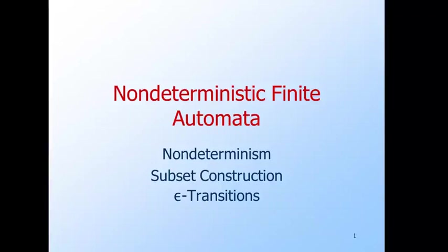Today we introduce the non-deterministic finite automaton. We're going to use the subset construction to show that every language that can be recognized by any non-deterministic finite automaton is still a regular language in that it can also be recognized by a deterministic finite automaton. We're then going to add epsilon transitions that allow spontaneous jumps from state to state, and we will show that these automata, even though they look more powerful, also can recognize only the regular languages.